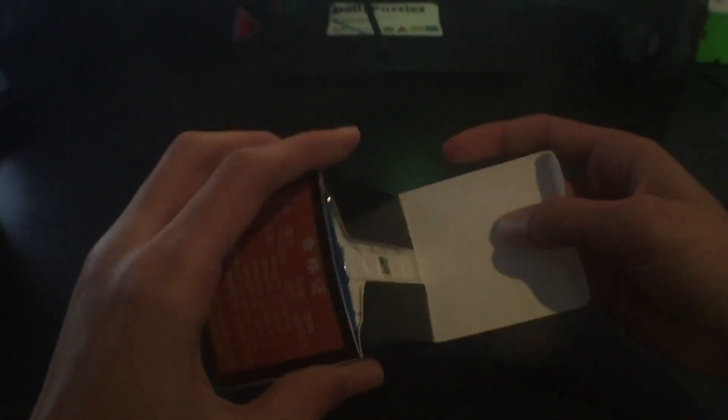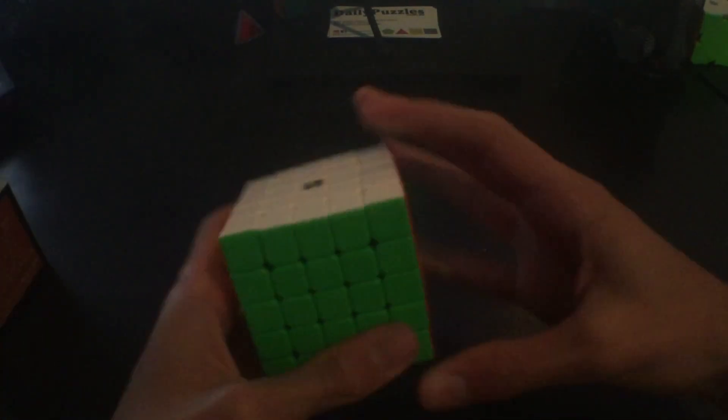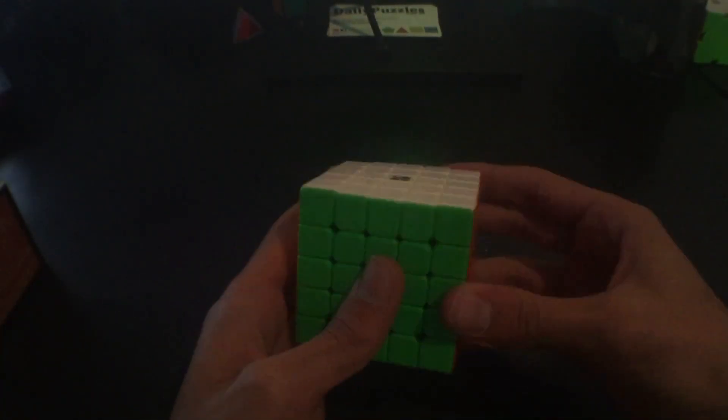That's the YuSu. Now we'll go on to the other YJ product, the YuChuang, which is a really nice 5x5 which I have tried before. Let's open this up, this is also magnetic. Same shades as the other one, shades are really nice.